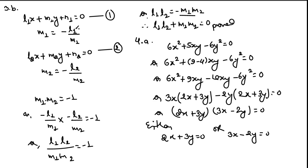Question 3b: if lines l₁x + m₁y + n₁ = 0 and l₂x + m₂y + n₂ = 0 are perpendicular, prove that l₁l₂ + m₁m₂ = 0. The slope of the first line is −l₁/m₁, and the slope of the second line is −l₂/m₂. Since the lines are perpendicular, the product of their slopes is −1. Substituting and simplifying, we get l₁l₂ + m₁m₂ = 0.